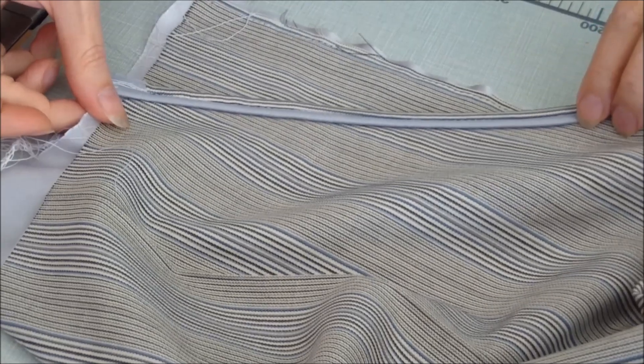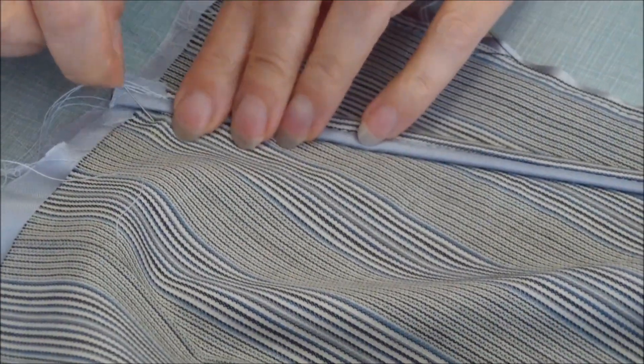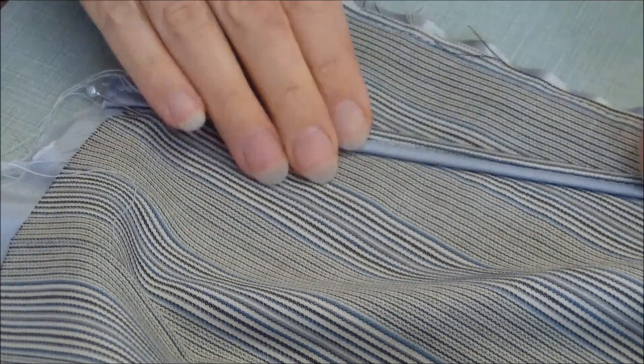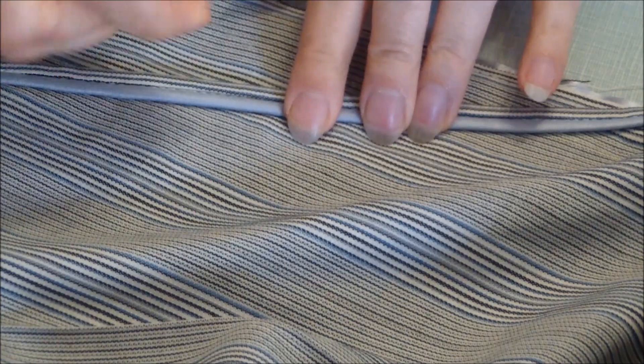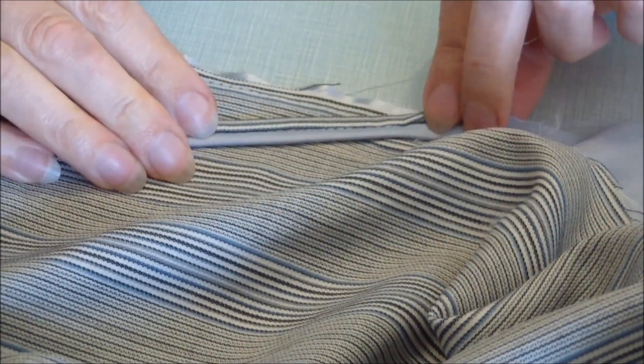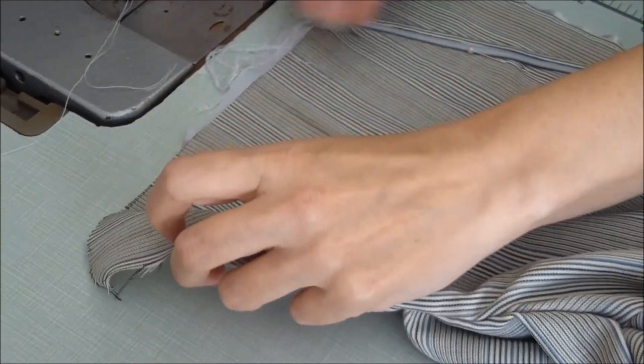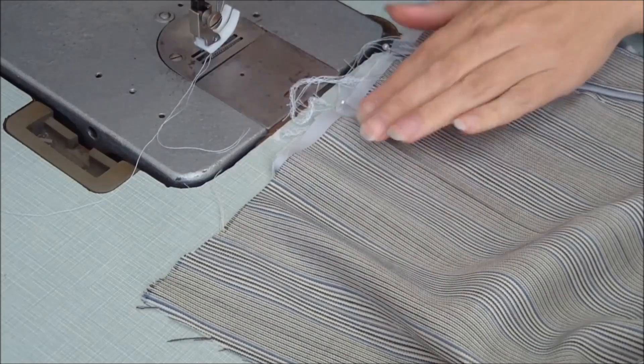Now place the front half of the pants exactly along this line marked on the pocket pouch and pin it. Now you need to sew the pocket along waistline of pants.